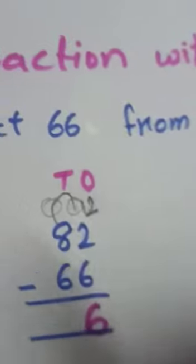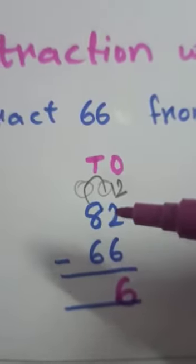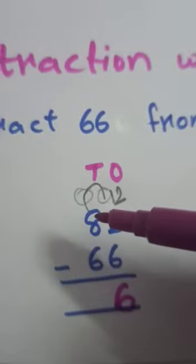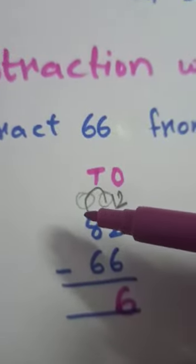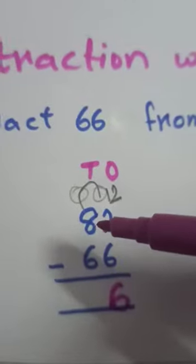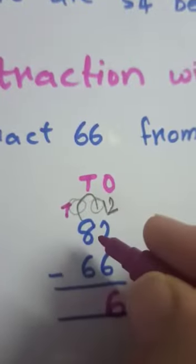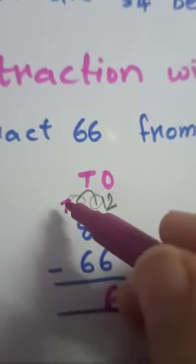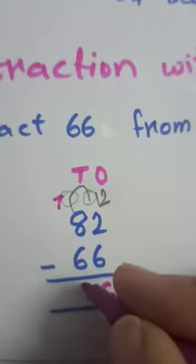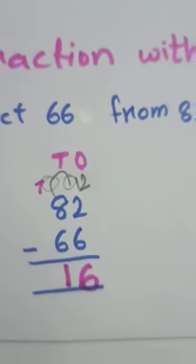Next. Now, on the 10th place. Already, we have taken one 10 from 8. So, we left with only 7 here. So, 7 minus 6 is 1. 7 minus 6 is 1.